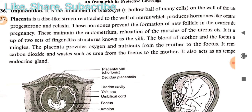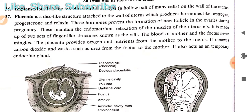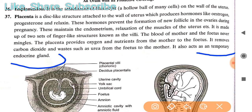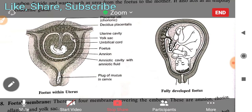These hormones prevent the formation of new follicles in the ovaries during pregnancy, maintain the endometrium, and cause relaxation of the uterine muscles. The placenta is made up of two sets of finger-like structures known as villi — similar to the villi found in the small intestine. The blood of the mother and fetus never mingles. The placenta provides oxygen and nutrients from mother to fetus, and removes carbon dioxide and waste such as urea from the fetus to the mother. It also acts as a temporary endocrine gland because it secretes hormones only during pregnancy.